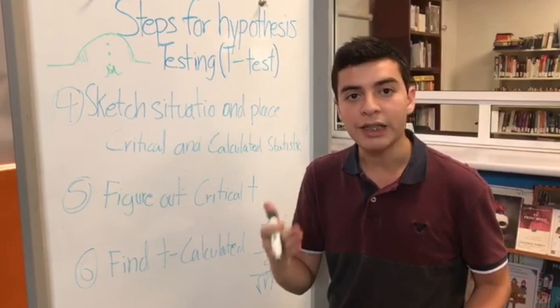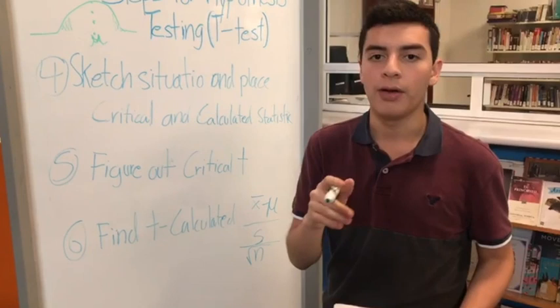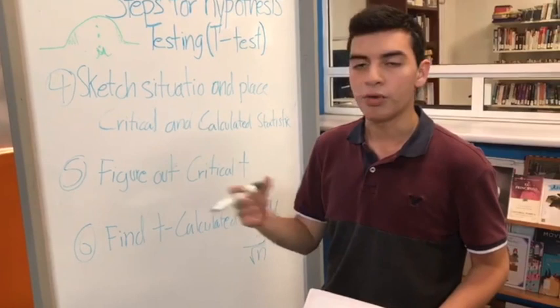Now, from the T table, we use the alpha. And from the alpha, depending if it's one tail, two tail, or whichever of those, we decide which one would be the critical T.